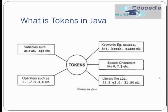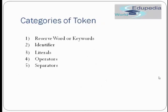You cannot use tokens that are outside the formation of Java language — you need to use only those tokens that have rules and specifications in Java so the compiler can understand them. Tokens supported in Java include keywords, variables, constants, special characters, operators, etc. Here is a diagram representation: tokens include variables like 'some', 'age'; operators like plus, minus, division, less than, greater than; keywords like int, break, class, double; special characters like dollar sign, hash, question mark; and literals like 120, 11.5, 2.0, 31.50.